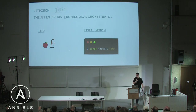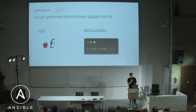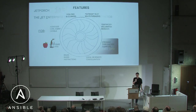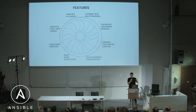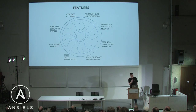JET Porch stands for JET Enterprise Professional Orchestrator. It was created for Apple systems and Linux systems, and you can install it either from source or with Rust. You can take a snapshot or just pause the video — these are all of the features and I will talk about some of them.